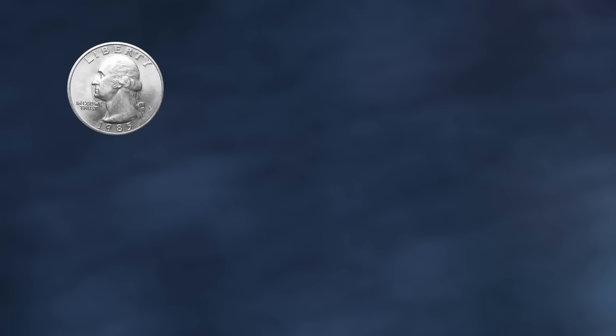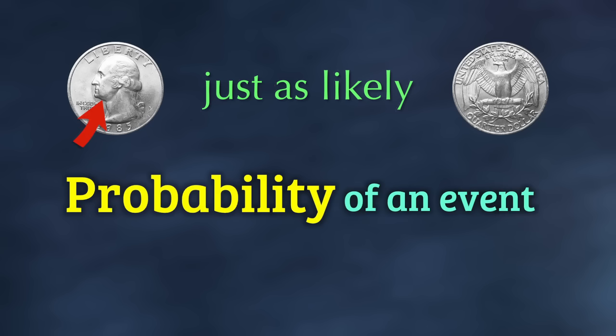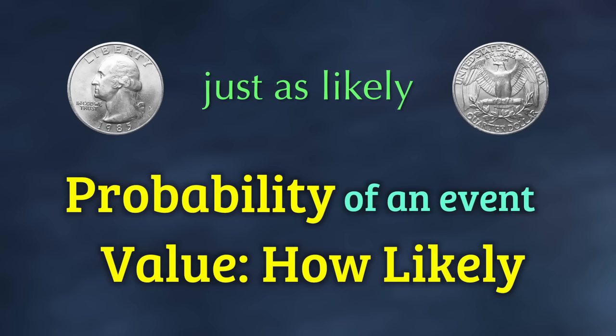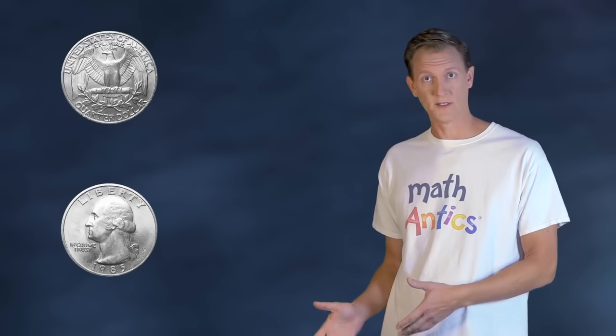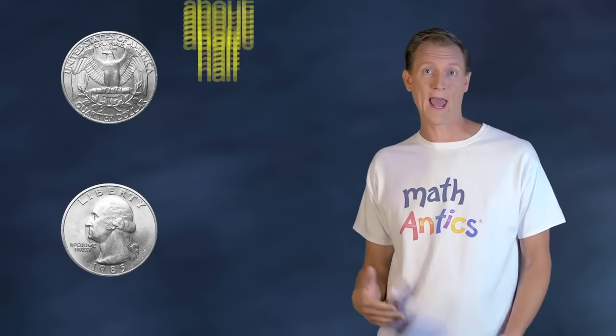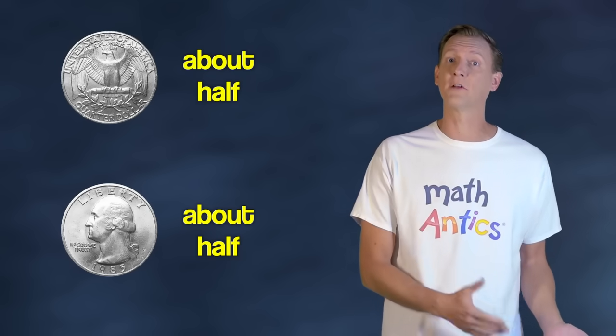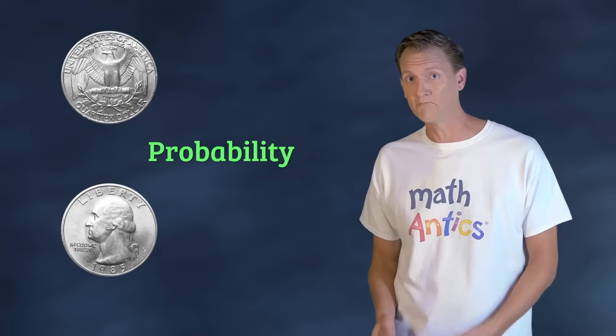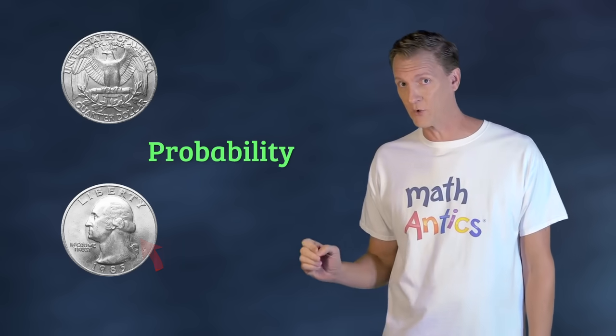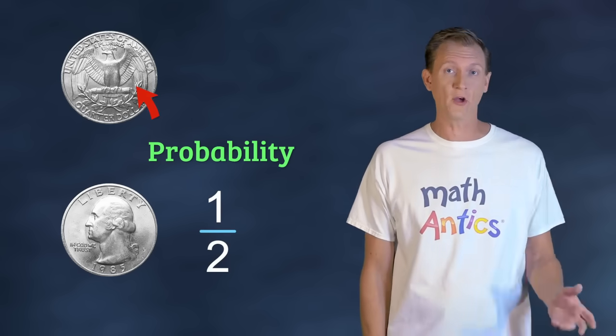But even though we don't know what each coin flip is going to be, we do know a few things about it. We know that with a fair coin toss, that heads is just as likely to show up as tails. The probability of an event, like getting heads or getting tails, is a value that tells us how likely that event is to happen. With our coin toss, since each side is just as likely and there's only 2 sides to a coin, if we flipped a coin a lot of times, we should expect that about half the flips will be heads, and about half the flips will be tails. That means that the probability of flipping heads is the fraction one-half, and the probability of flipping tails is also one-half.